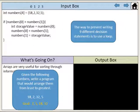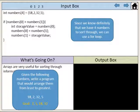The way to prevent writing nine different decision statements is to use a loop. Since we know definitely that we have four numbers to sort through, we can use a for loop.